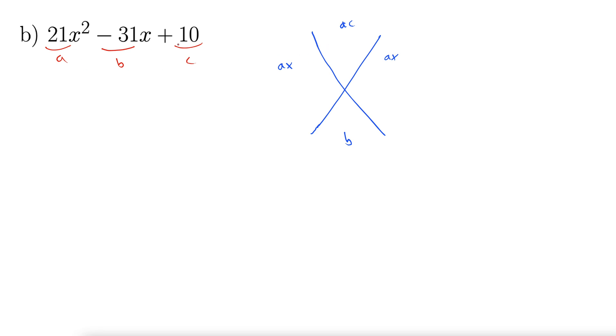So AC is 210. B is negative 31. That goes down here. AX is 21x. And then we do our dividing line. 21x dividing line. So we need factors of 210 that add to negative 31.